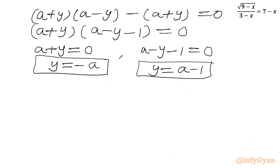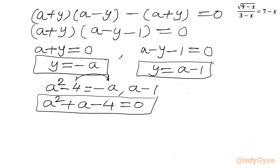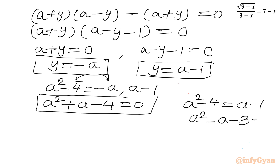Now applying each y value to the equation a squared minus 4 equals y: substituting y equals minus a gives a squared plus a minus 4 equals 0 (first quadratic); and substituting y equals a minus 1 gives a squared minus 4 equals a minus 1, or a squared minus a minus 3 equals 0 (second quadratic). So we have two quadratic equations to solve.